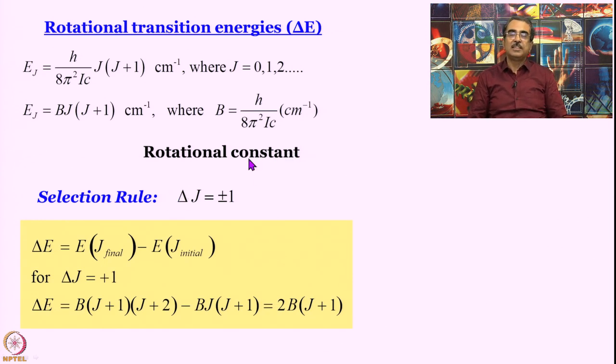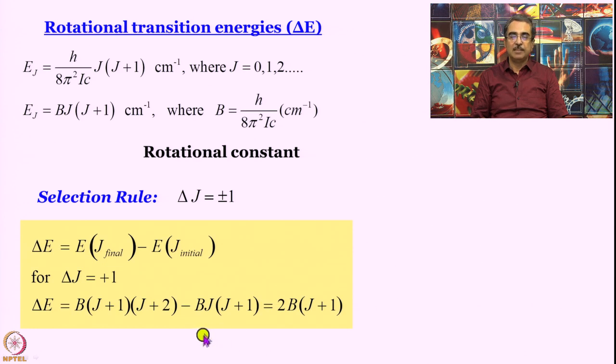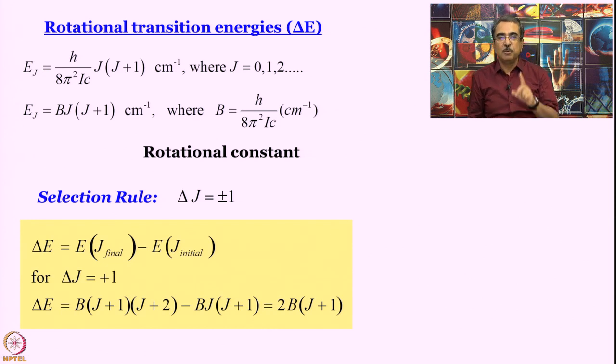There is a selection rule — not all transitions take place. The selection rule, without going into the derivation, is ΔJ = ±1. So what would be ΔE for ΔJ = +1? You substitute the values: the energy for the Jth level is B·J(J+1). For the (J+1)th level, write J+1 in place of J, giving B(J+1)(J+2). Subtract to get 2B(J+1). This means two things: first, the energy levels are separated by 2B(J+1); second, your rotational spectral lines will also occur at 2B(J+1), so we get line spectra.